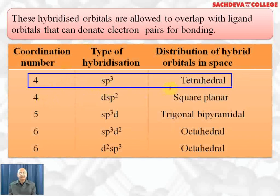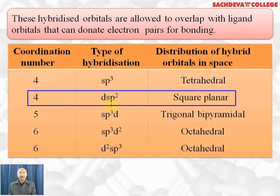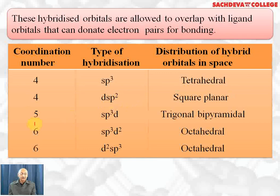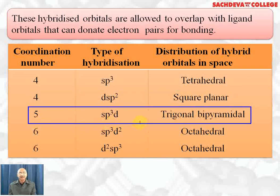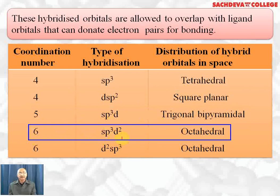If coordination number is four and hybridization is sp³, shape will be tetrahedral. If coordination number is four and hybridization is dsp², shape will be square planar. If coordination number is five, hybridization is sp³d or dsp³ and shape will be triangular bipyramidal. With coordination number six, sp³d² hybridization gives an octahedral shape.